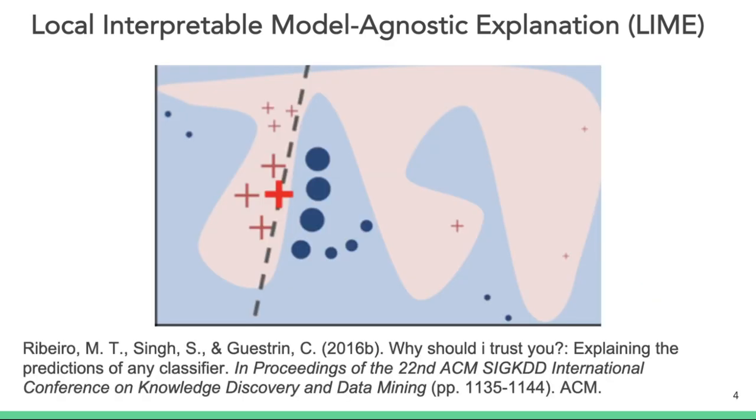The key idea of what LIME is trying to do is this: The classification decision boundary can be globally complex and squiggly, but in the local region it is simple and linear. In this specific example, we're trying to explain the decision distinguishing a red cross from a blue dot. The decision boundary is represented by blue and red regions. LIME is tasked with explaining the decision for a specific instance, the dark red cross in this case.